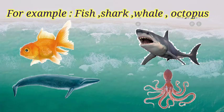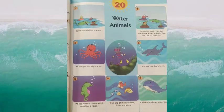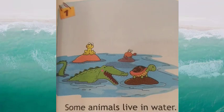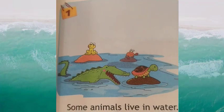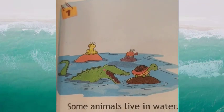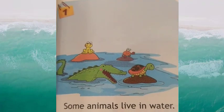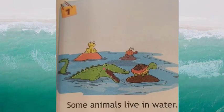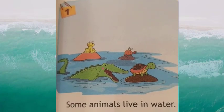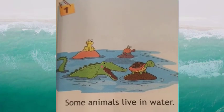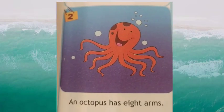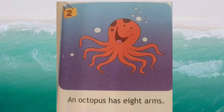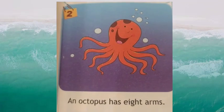Now this is chapter number 20. Box number one: some animals live in water. Kuch animals paani mein bhi rehte hain.